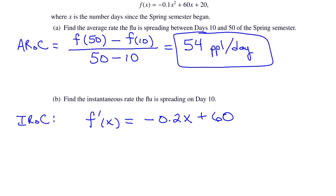It's negative 0.2x plus 60. And on day 10, we plug in 10, and we get 58 people per day.